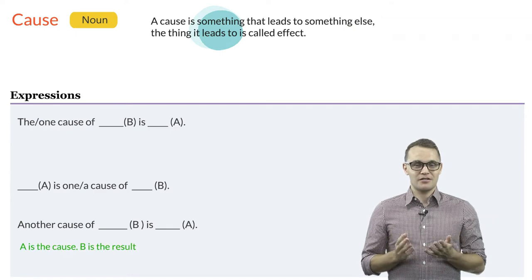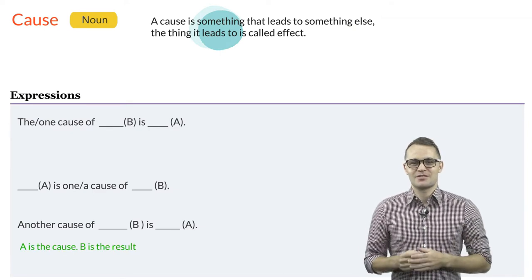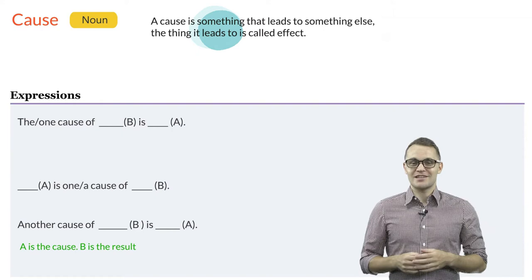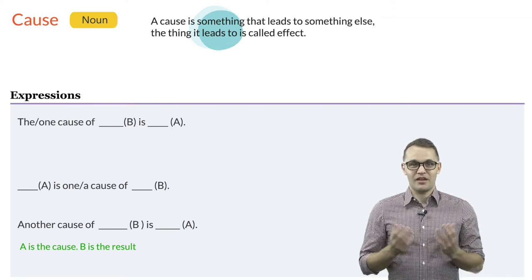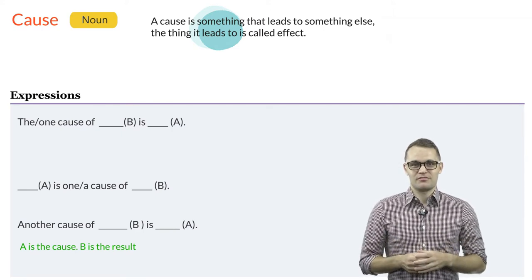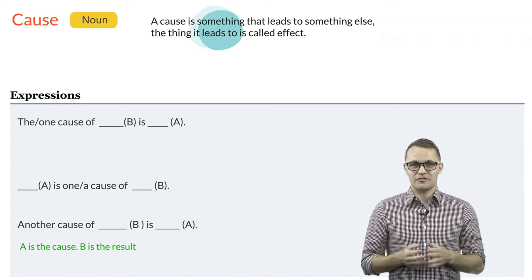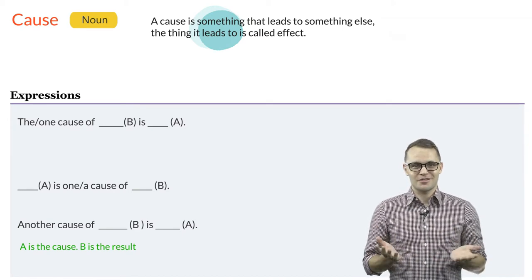The following patterns and expressions are commonly used with the noun cause. Note that A here is the cause and B is the result. So one cause of B is A. A is a cause of B. And another cause of B is A. Here are some example sentences.